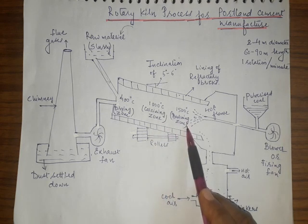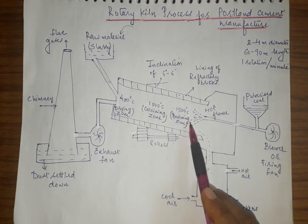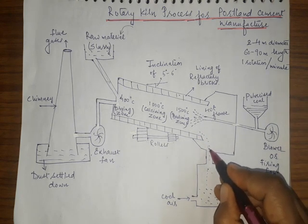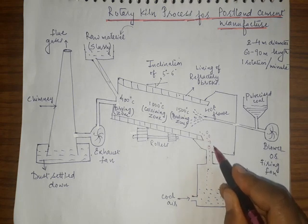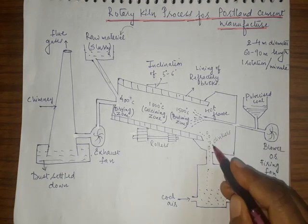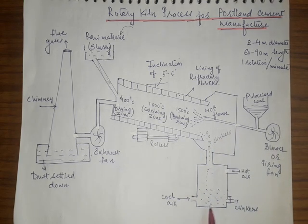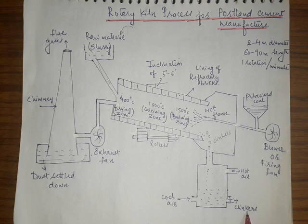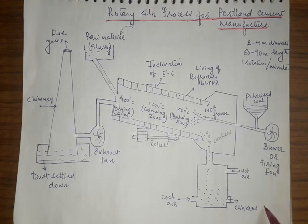In the drying zone, water is evaporated. In the calcining zone, the process of calcination occurs. In the burning zone, the chemical reactions for formation of cement occur. Whatever is formed falls down in the form of small pellets known as clinkers. These clinkers are cooled by subjecting them to cool air.